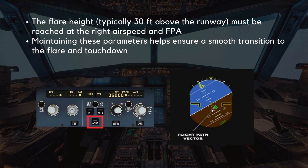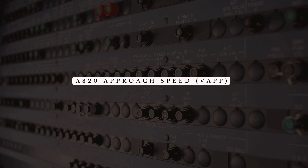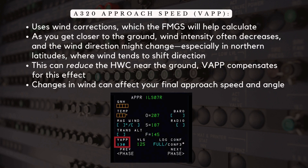Maintaining these parameters helps ensure a smooth transition to the flare and touchdown. The auto thrust and flight path vector are two critical tools that assist you in maintaining the correct approach. It's also important to note how you calculate your approach speed, or VAP. This speed is determined using wind corrections, which the FMGS will help calculate.